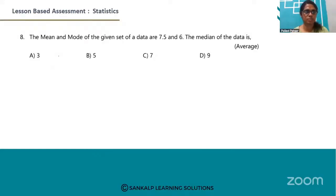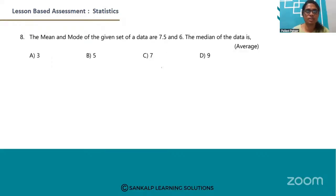Look at question number 8. The mean and mode of the given set of data are 7.5 and 6. Find the median of the data. We know the relationship between mean, median, and mode.